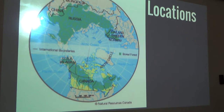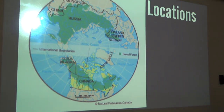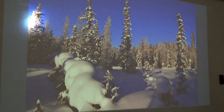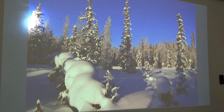The final biome is the boreal forest, also called the Taiga — the Russian name for it — and the Northern Coniferous Forest. These are all the same biome with various names. It is located in the northern part of the northern hemisphere, mainly in North America and Asia. In North America it spans from Alaska to Newfoundland, making up a majority of Canada's area. It also makes up a large part of Russia, spanning all the way to Norway.